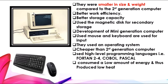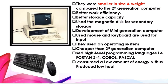Third generation computers had improved performance — they were fast and reliable due to the reduction of computational time from microseconds to nanoseconds. They had a larger storage capacity and used the mouse and keyboard as inputs. It is at this generation that the operating system was invented, used for better resource management using the concept of time sharing and multiprogramming. These computers were cheaper and consumed less energy, producing low heat.